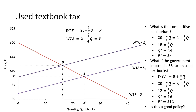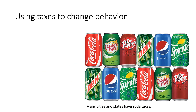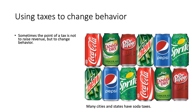Thinking about whether this is a good policy depends on the welfare implications and how much deadweight loss is generated. With the salt example we found that governments use the salt tax to raise revenue. But sometimes governments utilize taxes to change behavior — the point of a tax is not only to raise revenue, but also to deter individuals from purchasing certain products.